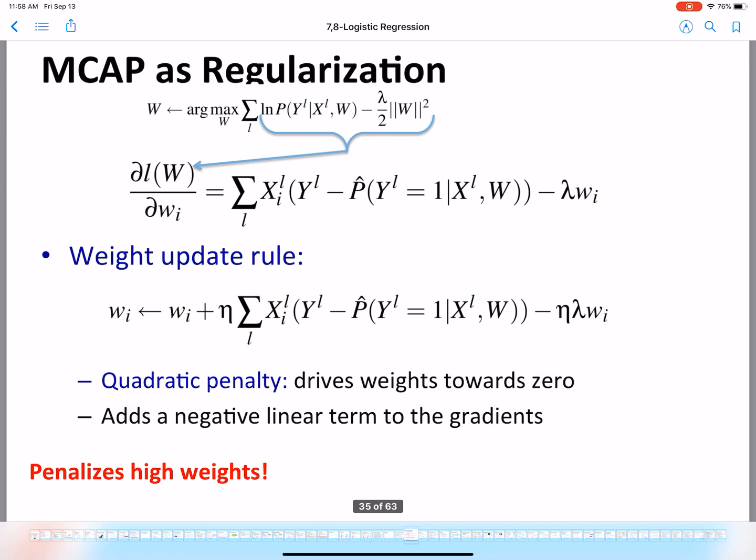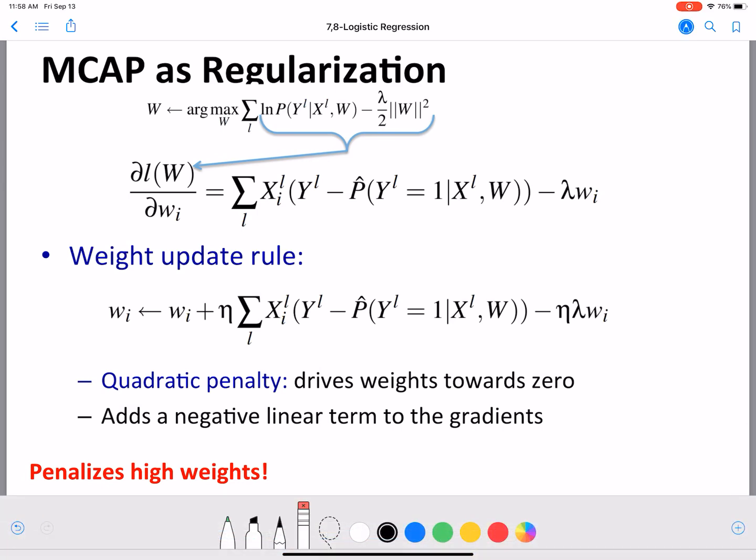Now let's see a little bit more about this. So we have W nothing but the solution for W, the MAP estimate or MCAP actually, the MCAP estimate for W. Nothing but argmax over W sigma over l where l corresponds to the examples. And then we have a conditional log likelihood term. And then we have a prior term.